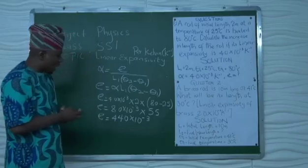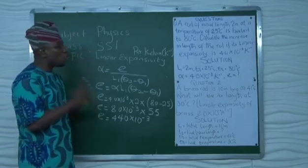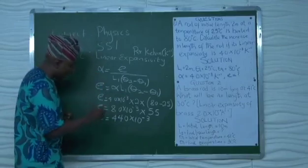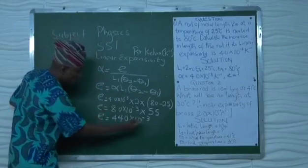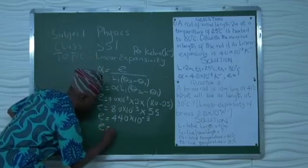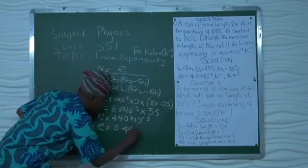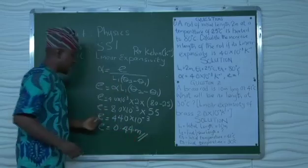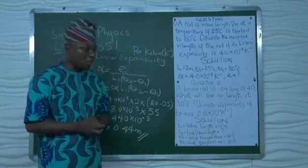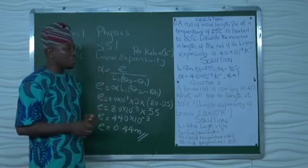Though you can leave the answer as 440 times 10 to the power of minus 3, because we are looking for the increase in length, you multiply through. When you multiply through, you get 0.44 meters. This is the answer to question 1: E equals 0.44 meters.